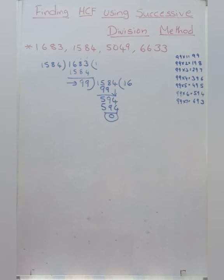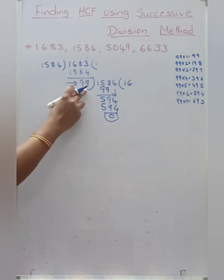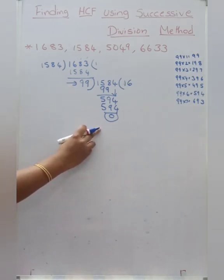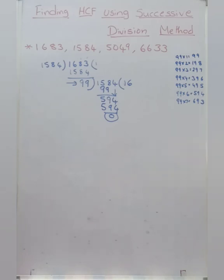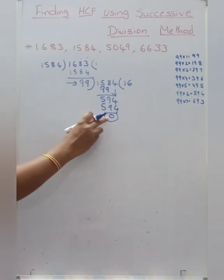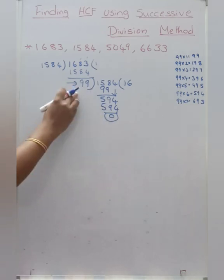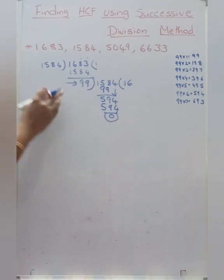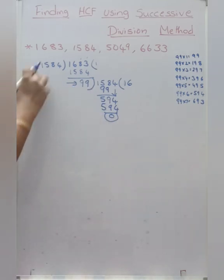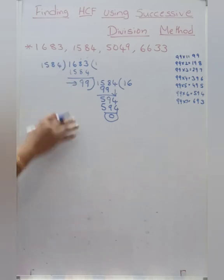So here we got remainder as 0 by dividing with 99. So HCF of these two numbers is 99. This process can be done any number of times till we get remainder as 0. When we get 0 as remainder, the number by which we are dividing is treated as HCF. That's why this process is called successive division method — we do it many number of times.